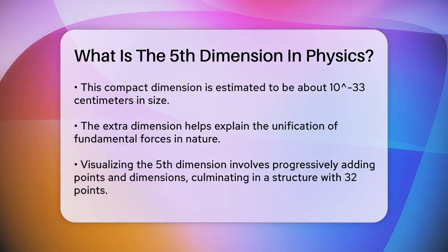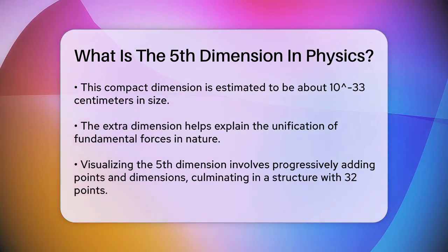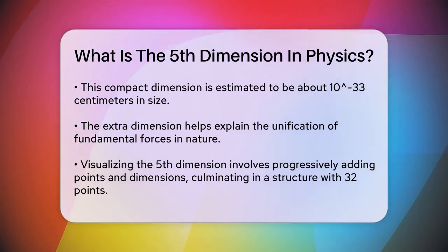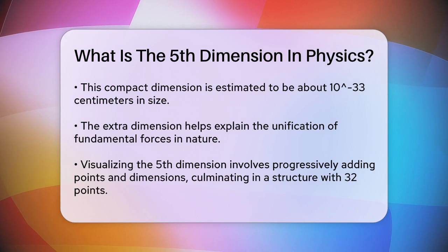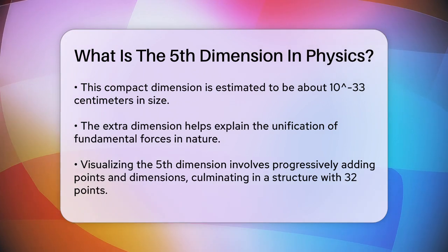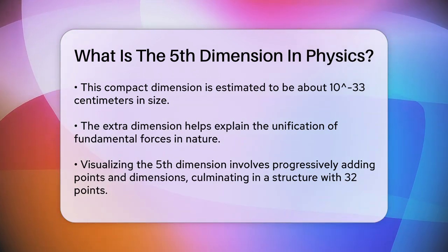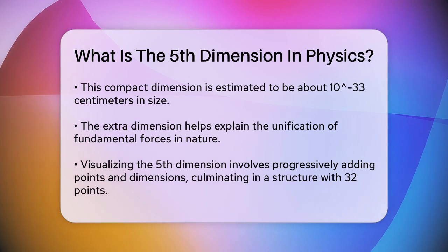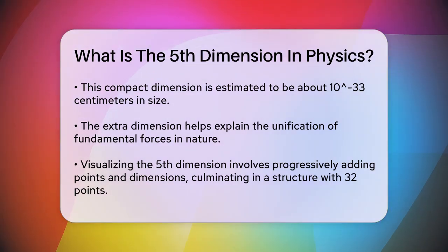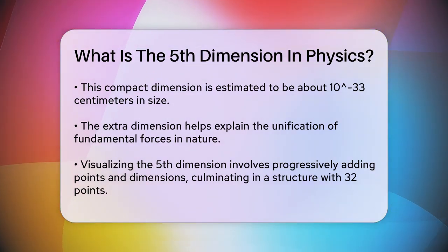Now, you might be wondering how we can visualize a five-dimensional space. It's not easy, but we can use a step-by-step approach. Start with a single point, which represents the zeroth dimension. To move to the first dimension, you need two points connected by a line. For the second dimension, you have four points forming a square. Doubling the points again gives you eight points, forming a cube in the third dimension.